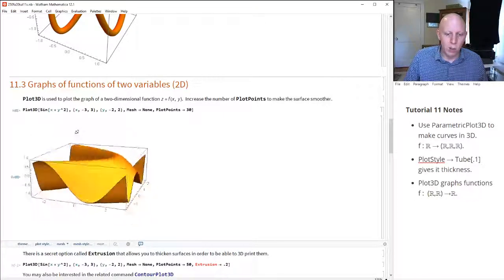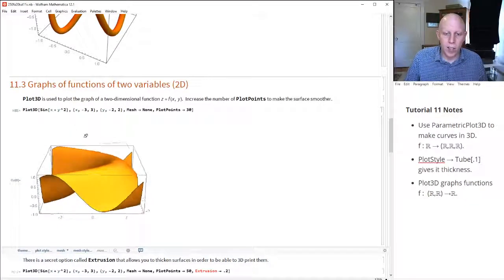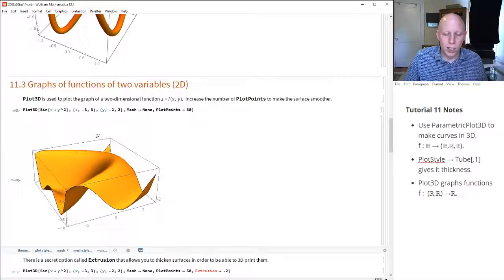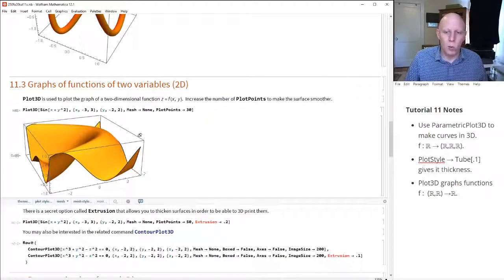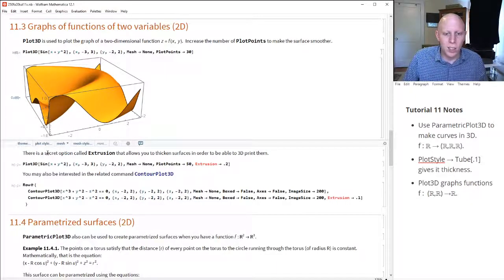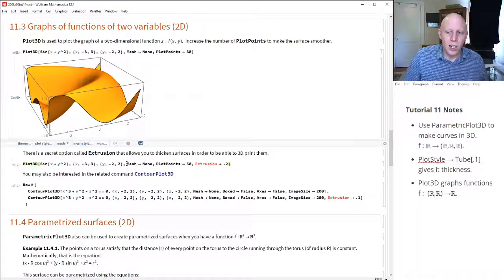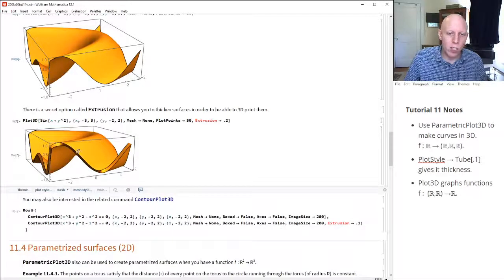This one's pretty cool. When you take, if you think about it, this surface doesn't have any thickness to it. Now, if you wanted to print this out and to have it and hold it and be able to feel what the surface feels like, you'd have to make it into three dimensions. And the way we can do that is we can use a secret option in Mathematica called extrusion. And what it does is it creates a, at every point, it goes out in a direction normal to that point by a certain distance.